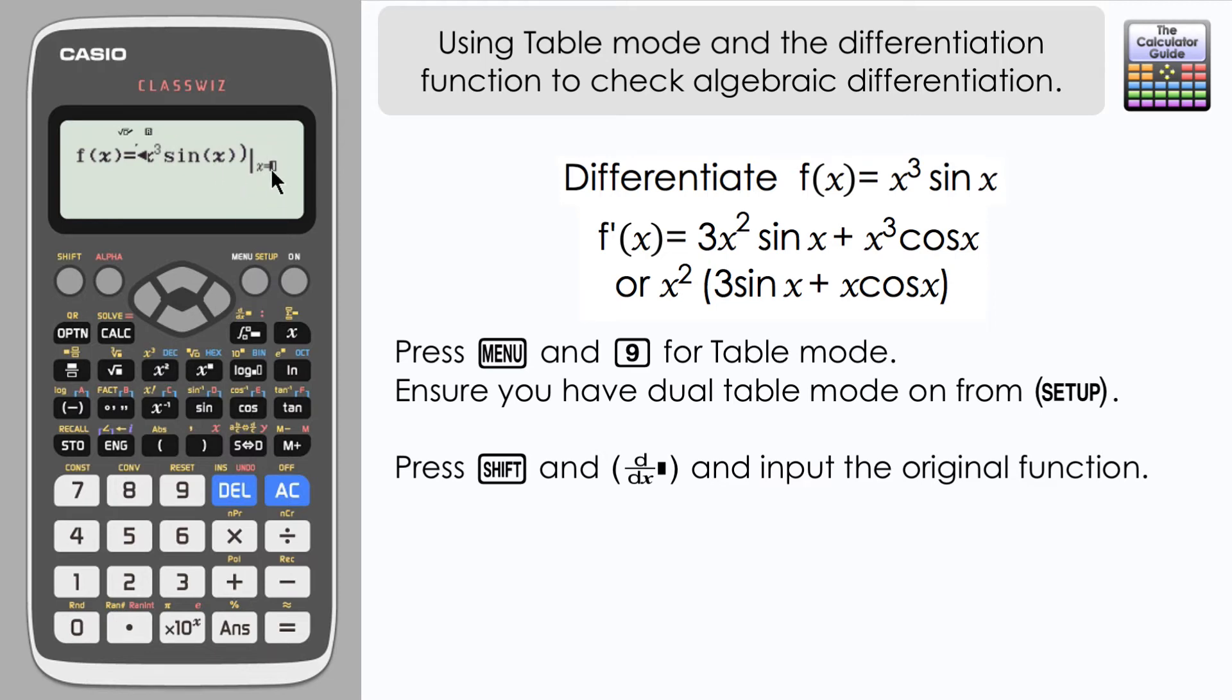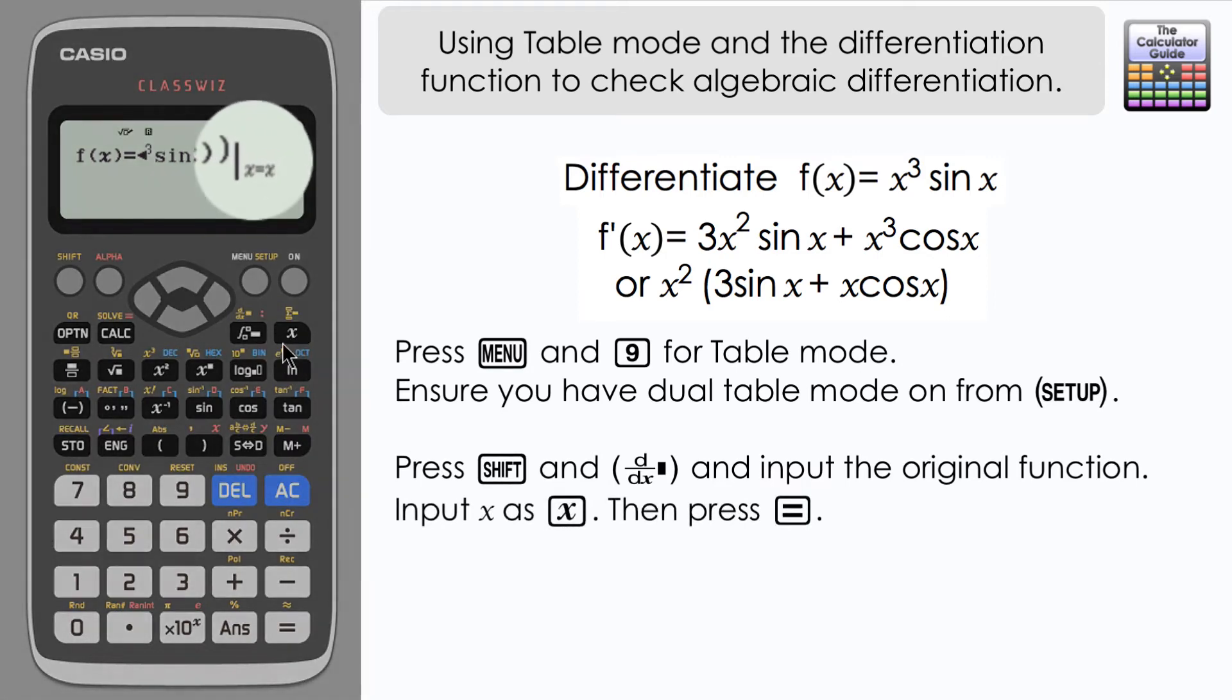And what's slightly different about this, if I navigate right to input my x, because we're using table mode, there's going to be various x's that we're going to try. So I'm just going to say x equals x here. So I'm just going to press the x button here. x equals x is what you want there, and that will allow various different values of x to be used when we process this through the table function.